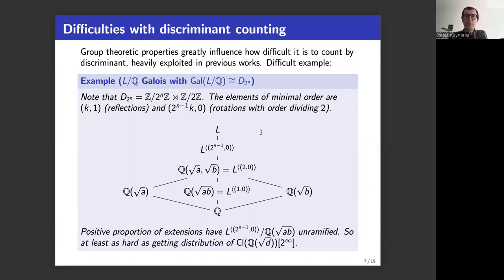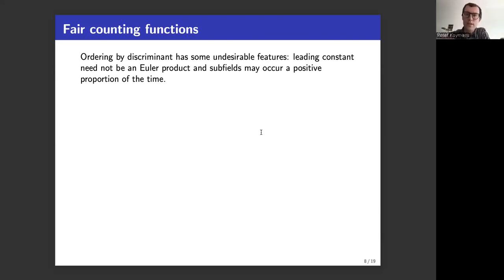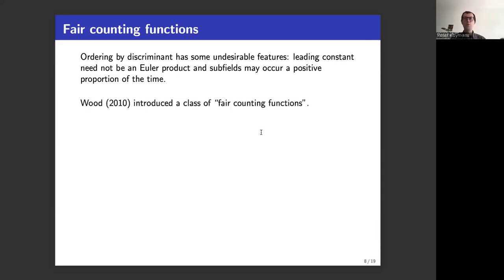Discriminant counting is a mixed bag: sometimes easier, sometimes very difficult. There's also some unfairness. The leading constants need not be an Euler product — undesirable in enumerative theory. Subfields may occur at positive proportions. These issues were first addressed by Melanie Wood in 2010, who introduced so-called fair counting functions to avoid the problems with discriminant.